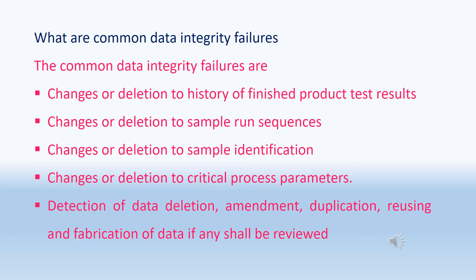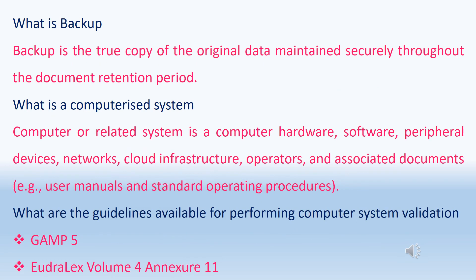What is backup? Backup is a true copy of the original data maintained securely throughout the document retention period. What is a computerized system? A computerized system comprises computer hardware, software, peripheral devices, networks, cloud infrastructure, operators, and associated documents such as user manuals. Guidelines available for computer system validation include GAMP 5, EU Annex 11, and other applicable guidelines.